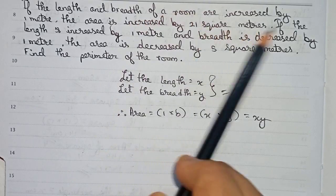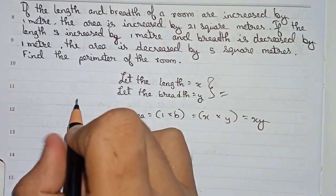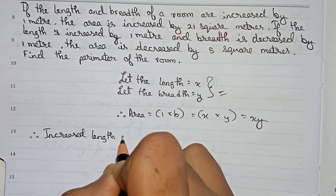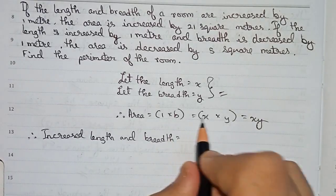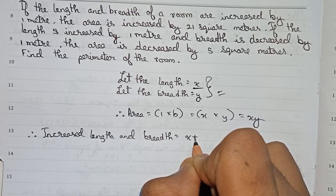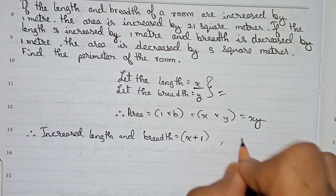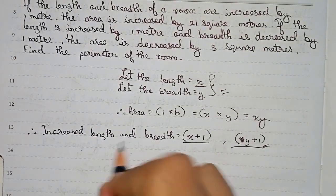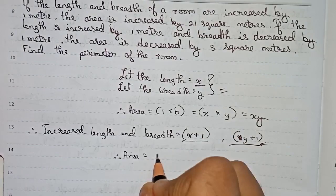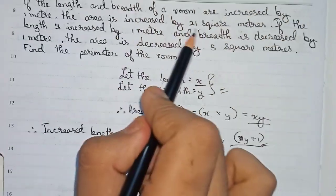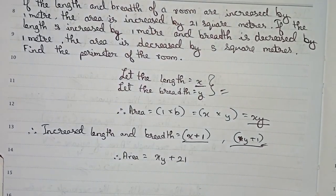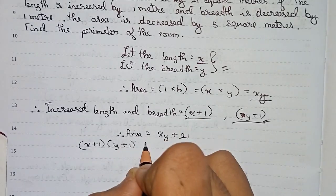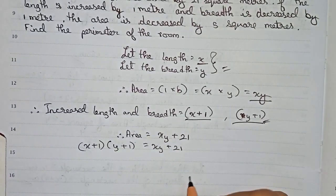It is given that if the length and breadth of the room are increased by 1 meter, the increased length is x+1 and the increased breadth is y+1. The original area is xy, and it is increased by 21, so the new area is xy+21. Therefore we write: (x+1)(y+1) = xy+21.